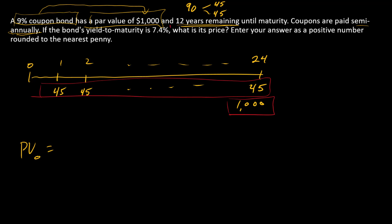What discount rate do we use? Well, we need a semi-annual version of the yield to maturity. And so since the yield to maturity is 7.4% per year, we have a discount rate of 3.7% for every six months.